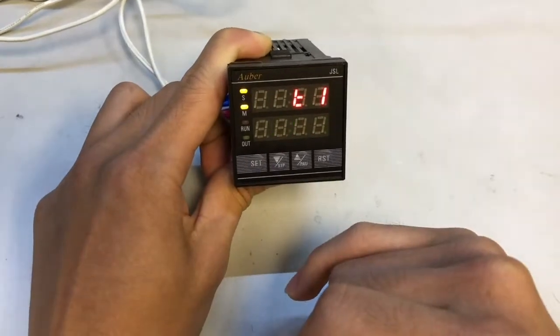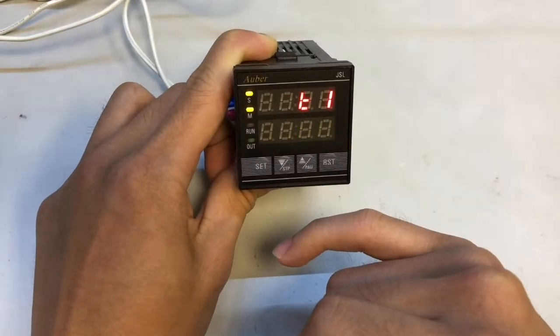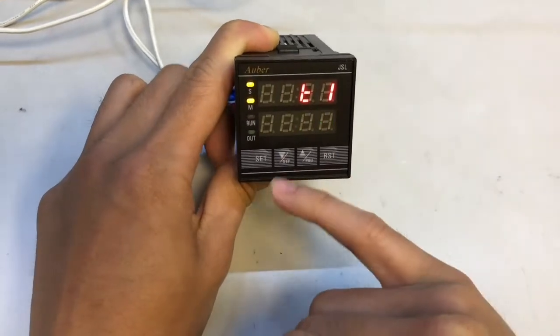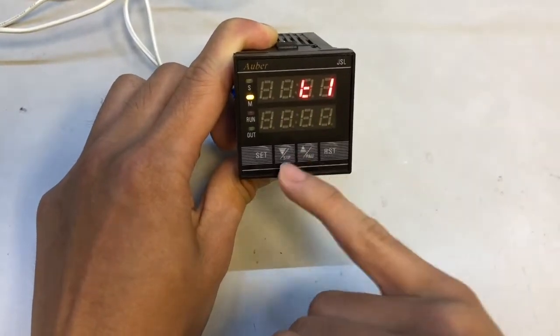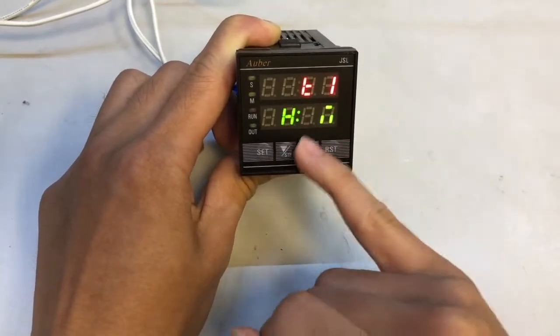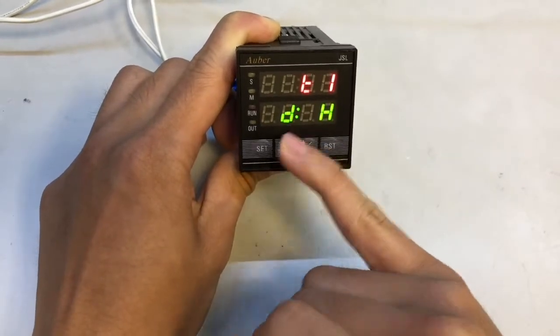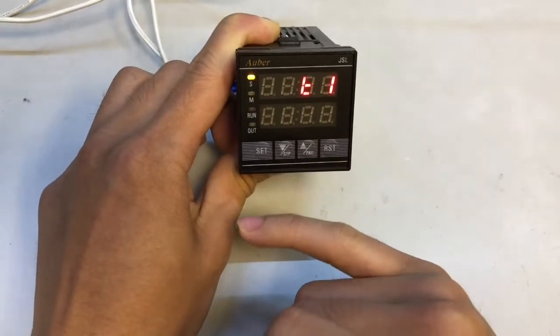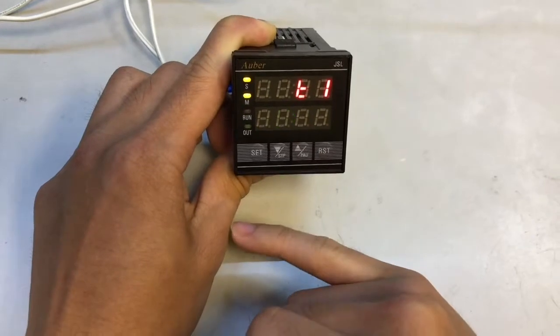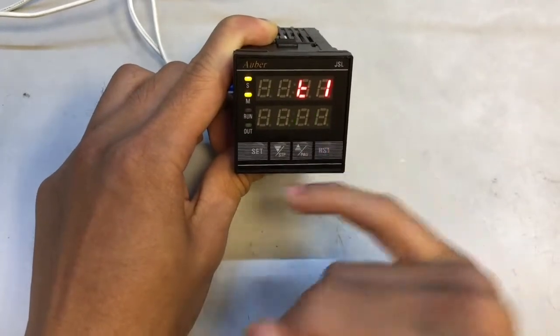Next we have our different timer units. You can set it to minute seconds, minutes, hour minute, hour, day hour, or just regular seconds. We're just going to keep it at minute seconds because it's usually easier to set seconds.